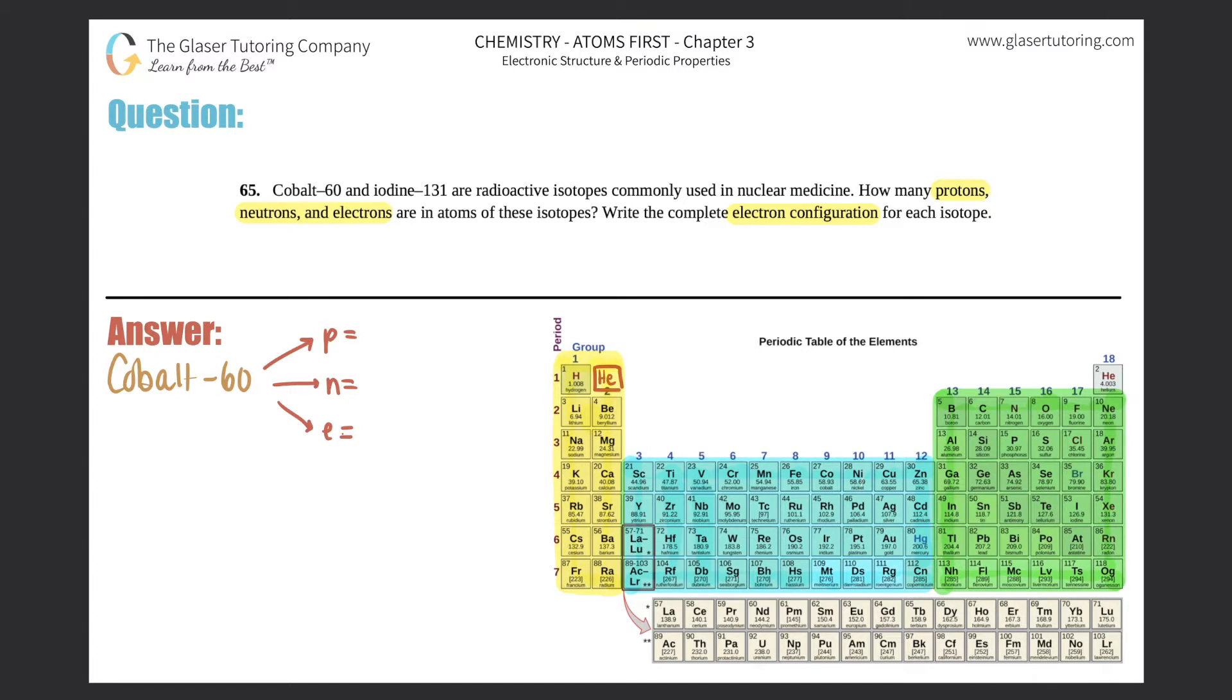If I change the atomic number of an element, you will automatically change it to a different element. So cobalt-60, the atomic number is 27. And remember, this goes back to chapter 21. What does the atomic number equal? Oh, it equals the number of protons. So this is basically saying that I have 27 protons because that's the atomic number.